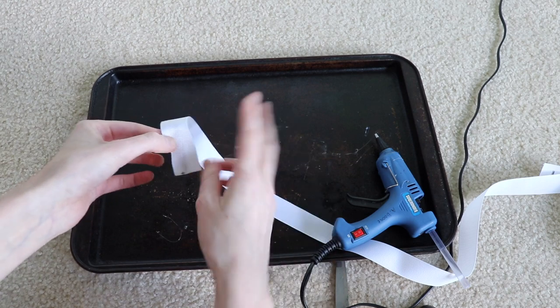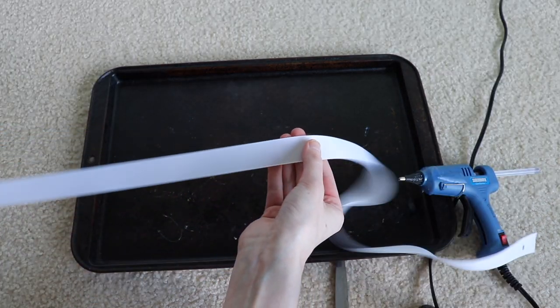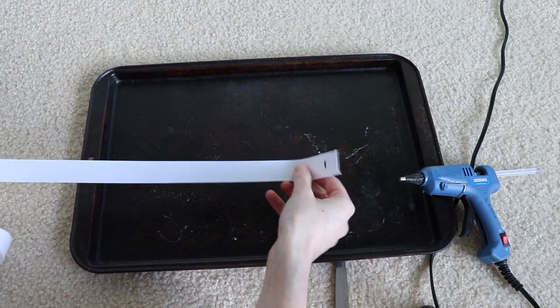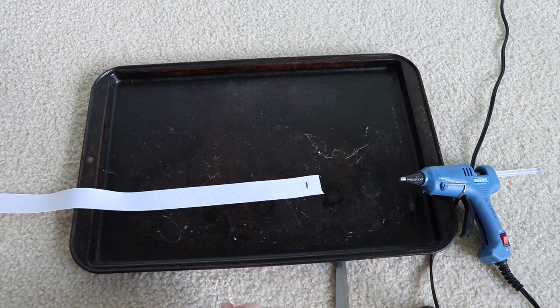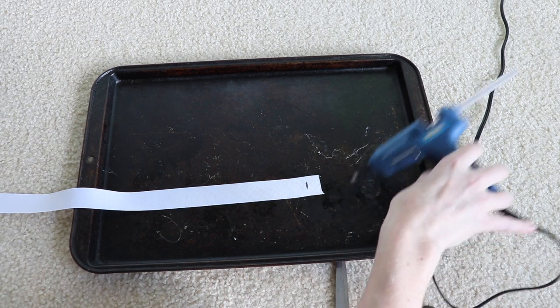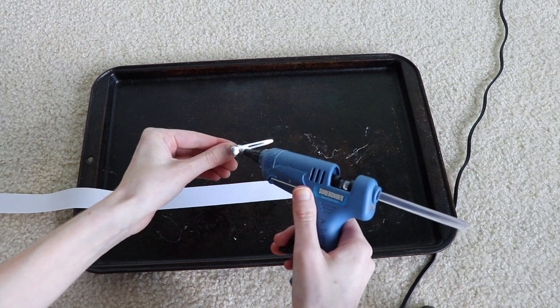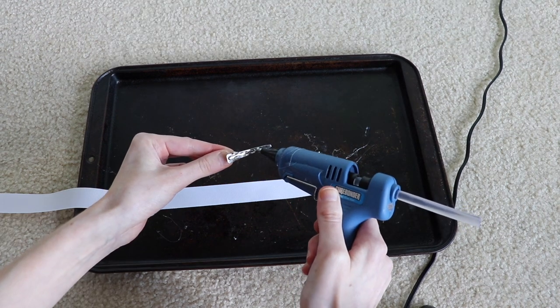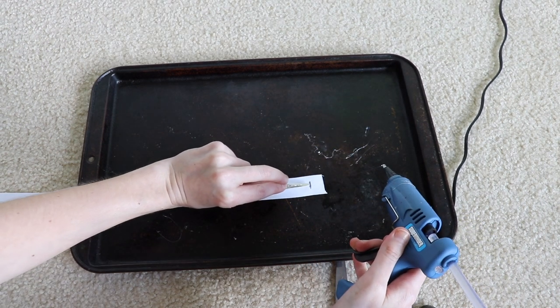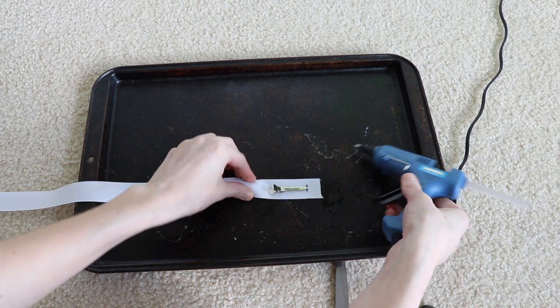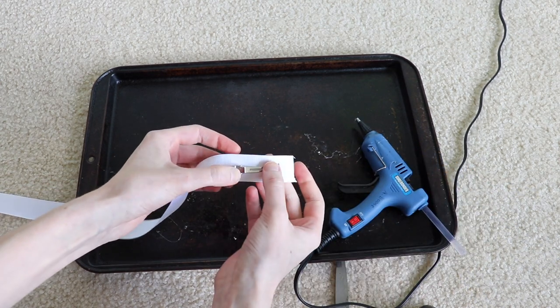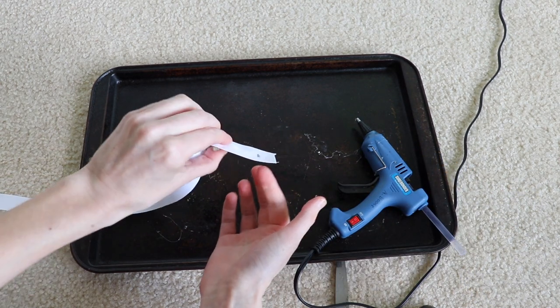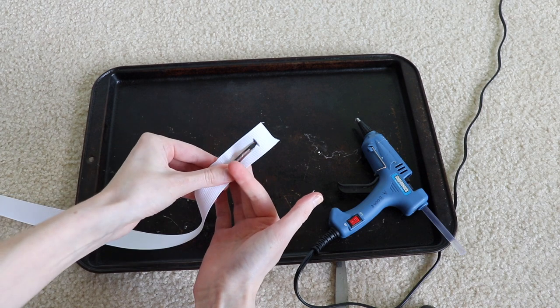And then it's time to do the other end. So we're going to do pretty much the exact same process where we're going to get our clip and we're going to put hot glue on the flat side of our clip, then stick the hot glue side to our ribbon. And we're using the marks that we made when we were measuring our ribbon to know how far to go. Get it really secure there together.